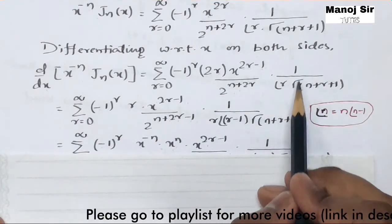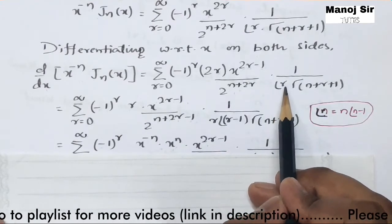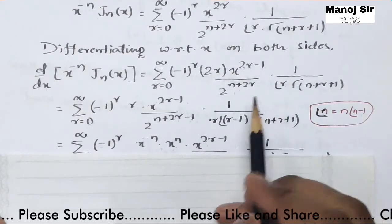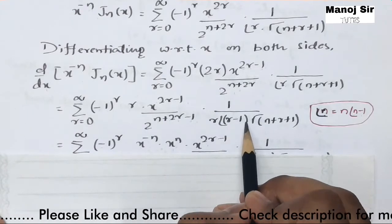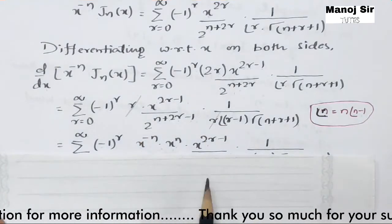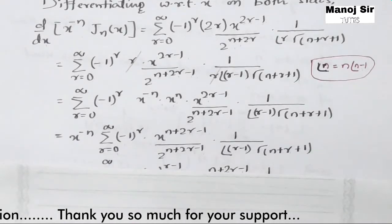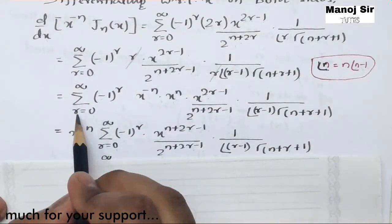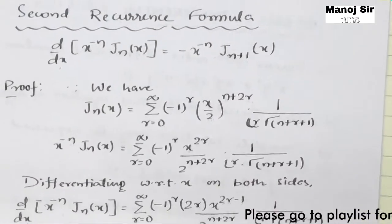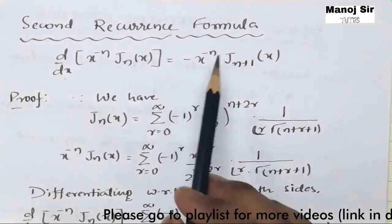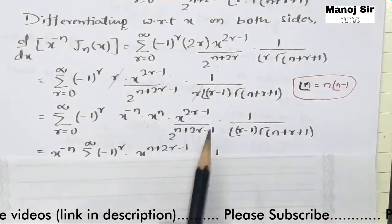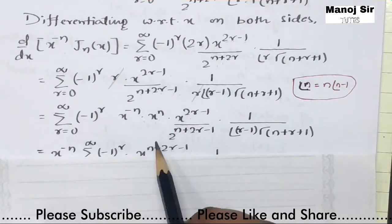In the denominator we use the factorial identity: r! = r times (r-1)!. This lets us rewrite factorial r as r times (r-1)!, and the factor r in the numerator cancels with the r in the denominator. We also multiply and cancel x^{-n} times x^n to leave 1.